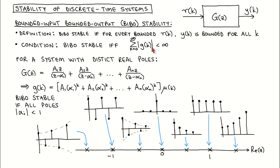However, if at least one pole is more than 1 in magnitude, then the impulse response will not decay to 0, and the sum will be infinite, which means that the system is unstable.